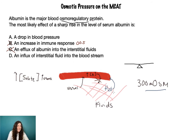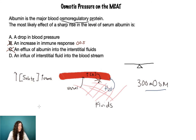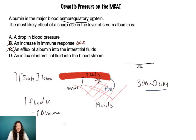Now we have answer D — an influx of interstitial fluid into the bloodstream — which is exactly what we've drawn in our diagram. Answer A says a drop in blood pressure, which is actually the opposite of what's happening. When we increase the movement of fluid into the blood vessel, we're increasing fluid volume in the blood vessel, which by definition means an increase in blood volume.